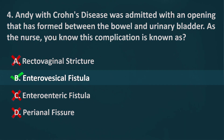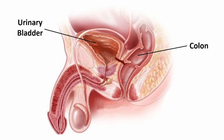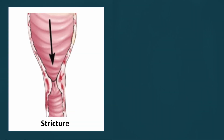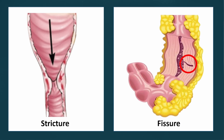The correct answer is Letter B, Enterovesical fistula. Fistulas are abnormal connections between an organ, vessel, or intestine and another organ. In this illustration, the urinary bladder and the colon are connected by a fistula, known as an enterovesical fistula. Strictures are narrowing or constriction of the lumen of a tube, duct, or hollow organ such as the intestines. Fissures are breaks or slits in tissue, usually at the junction of skin and mucous membrane, commonly caused by constipation or passing hard stools.